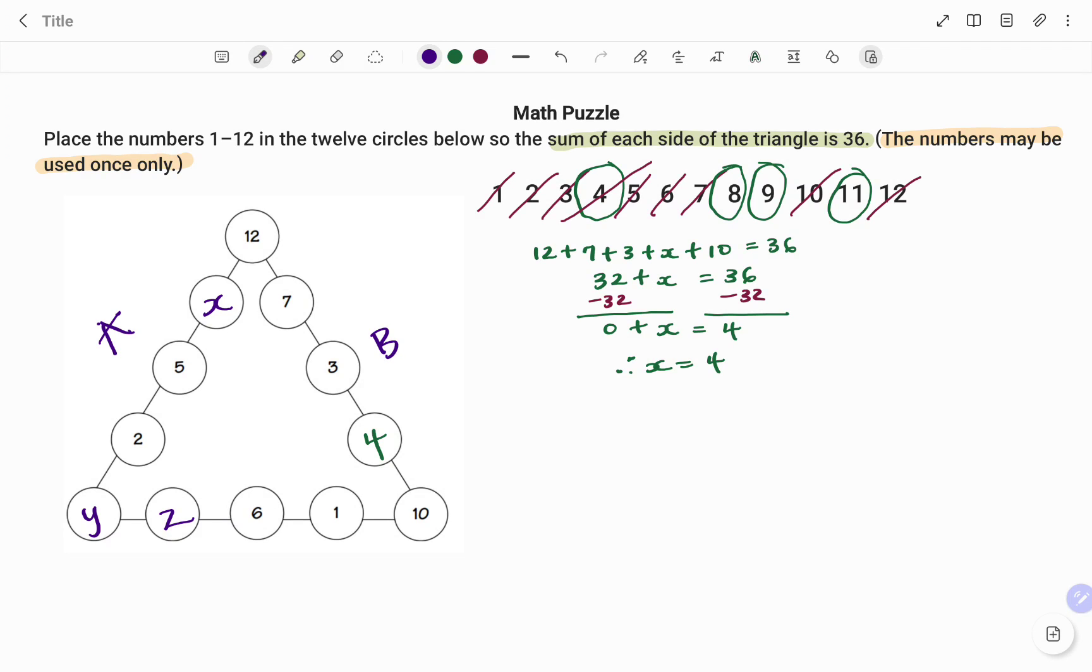Let me start with side A. So for my side A, what I have is 12 plus x plus 5 plus 2 plus y equals 36. 12 plus 5, that's 17, plus 2, that's 19, so I have 19 plus x plus y equals 36. Therefore x plus y, subtracting 19 from both sides, will give me 36 minus 19, that's 17. I'm going to keep that as my first equation with two variables, x and y.